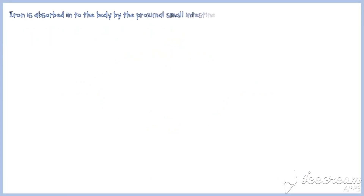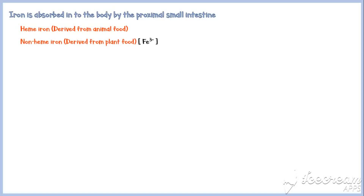Iron is absorbed into the body by the proximal small intestine. There are two forms of dietary iron: heme iron, which is mainly derived from animal food, and non-heme iron, which is mainly derived from plant food. The majority of non-heme iron is in the form of ferric ion.